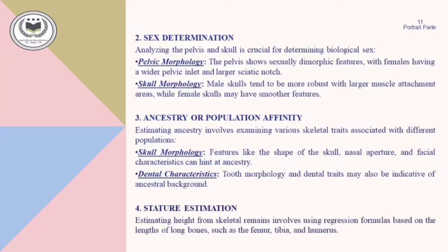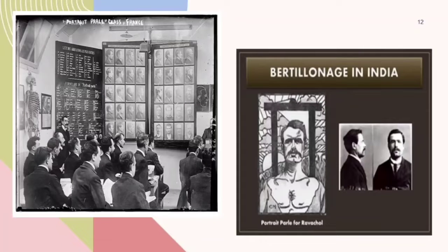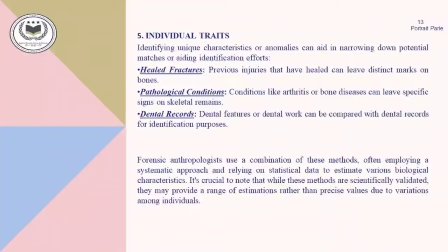Dental characteristics can also help in the estimation of ancestry. For stature estimation, estimating height from skeletal remains involves using regression formulas based on the length of long bones such as the femur, tibia, and humerus. The last characteristic is individual traits — identifying unique characteristics or anomalies can aid in narrowing down potential matches. For example, healed fractures can leave distinct marks on bones, pathological conditions like arthritis or bone diseases can leave specific signs on skeletal remains, and dental records or dental work can be compared for identification purposes.